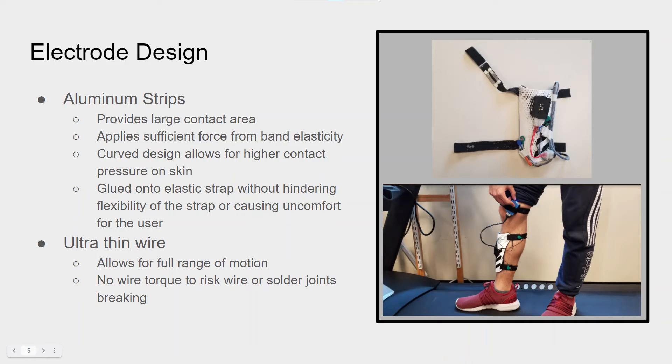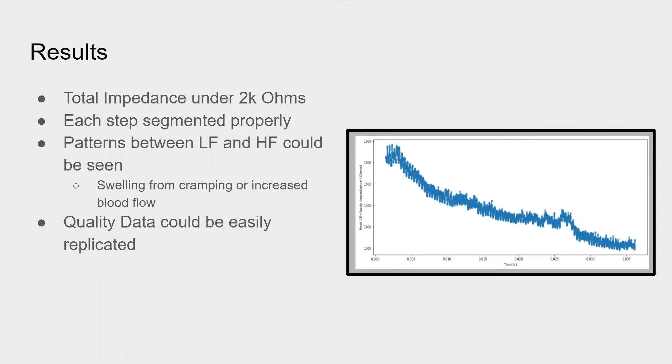They also provide some rigidity with the help of the elastic strap for good pressure onto the skin, which those two are the most important for reducing skin contact electrode impedance: good contact and good pressure. Thin wire is then threaded through the straps of the shin guard to allow for a wider range of motion when using the device.